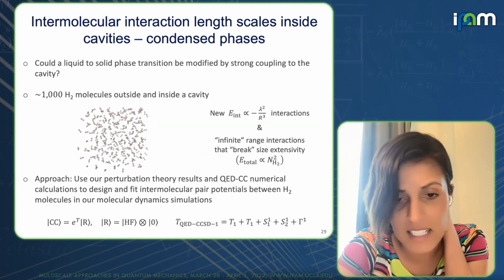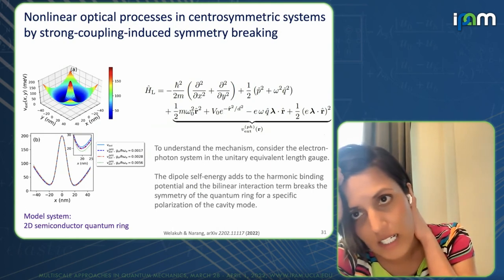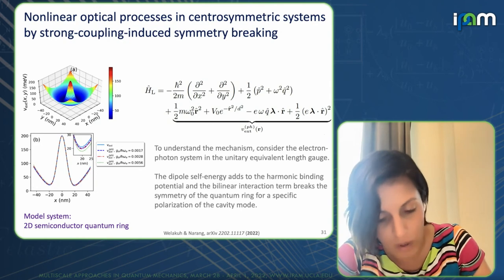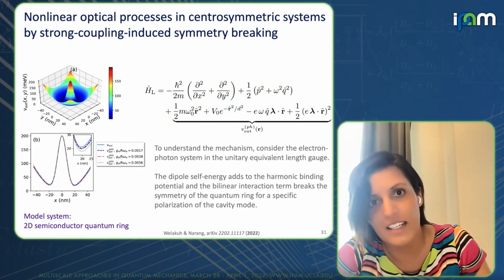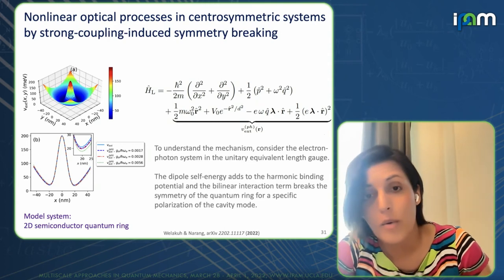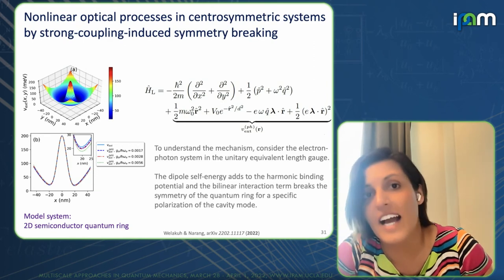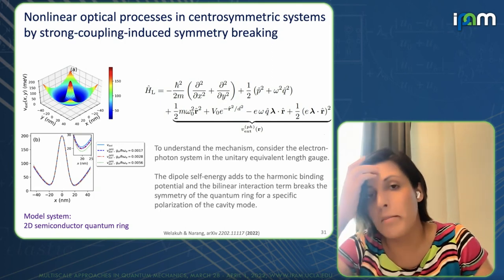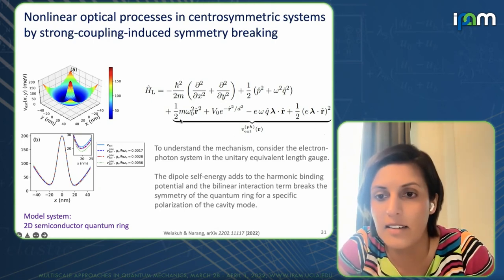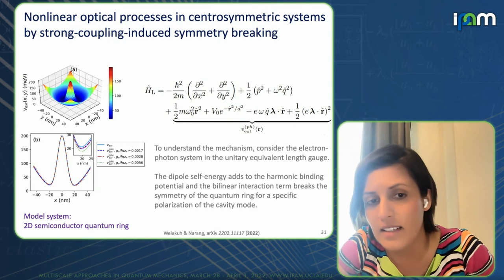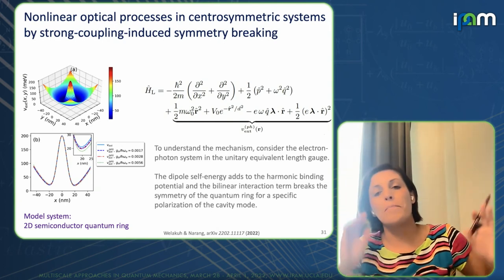Now I want to switch gears and tell you about something else you could accomplish in a cavity that we recently reported — something you could not do any other way. This is headed back in the direction of nonlinearities and controlling nonlinear processes. We're all familiar with the fact that nonlinear processes in centrosymmetric systems — you shouldn't really get a χ⁽²⁾ or χ⁽⁴⁾; the second and fourth order should be suppressed. However, we realized that by strong coupling to the cavity you can actually induce such symmetry breaking and get these nonlinear optical processes to go in the coupled system.